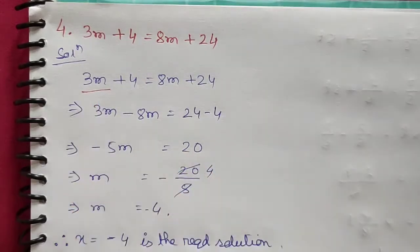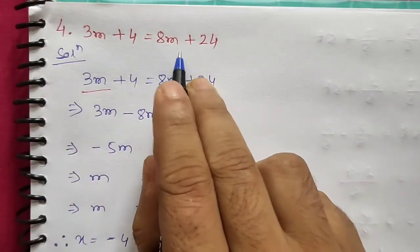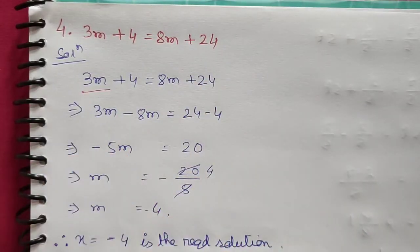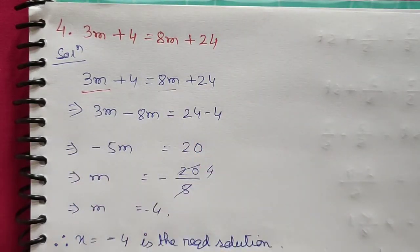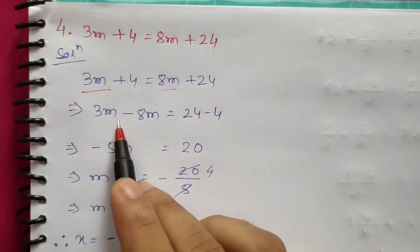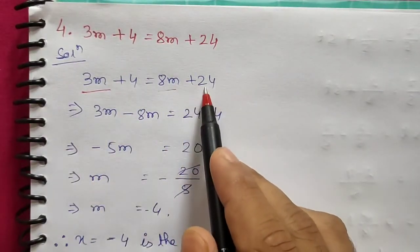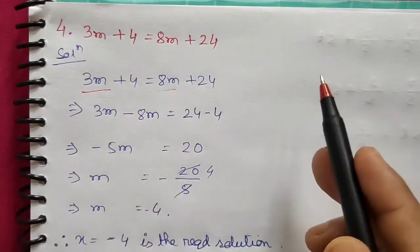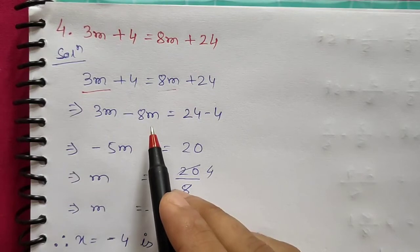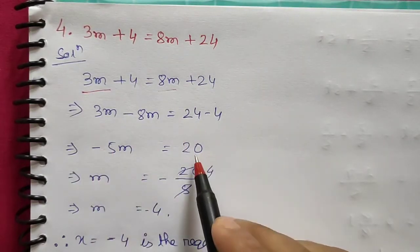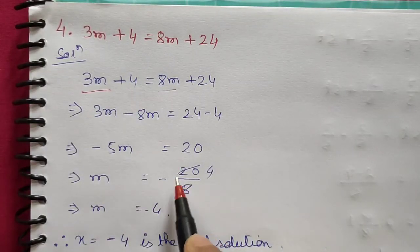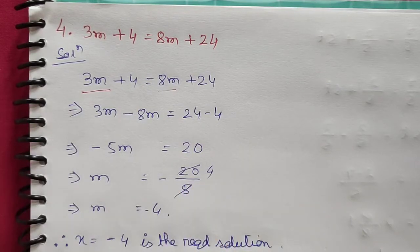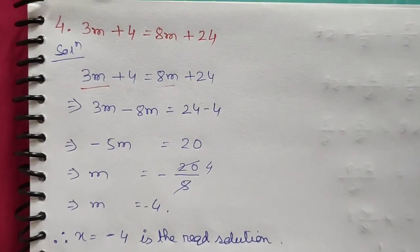Question 4: 3m plus 4 equals 8m plus 24. Transposing 8m to the left gives 3m minus 8m, which is minus 5m. Transposing plus 4 to the right gives minus 4, so minus 5m equals 24 minus 4, which is 20. Dividing by minus 5 gives m equals 20 divided by minus 5, which is minus 4. Hence m equals minus 4 is the required solution.